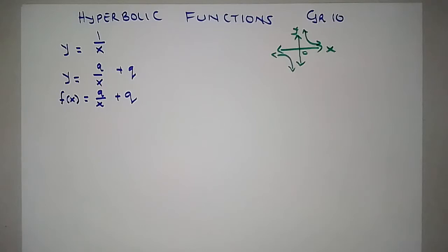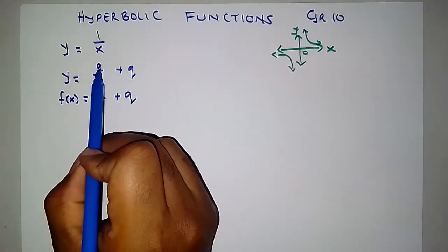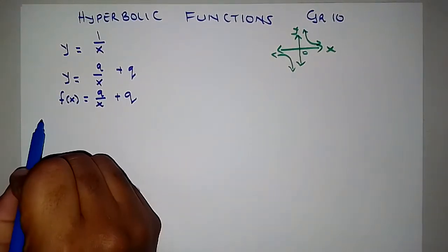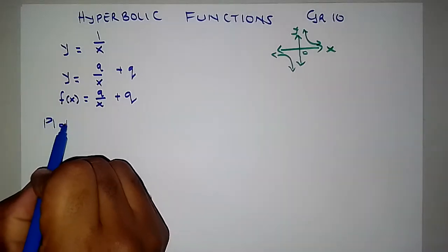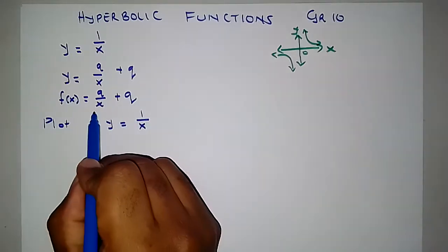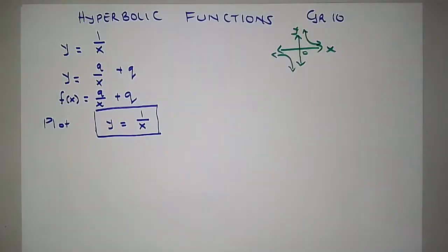Today we've got a general form of y equals a divided by x plus q, where a and q are constants. Before we go any further, I want us to plot this function together. We'll start with y equals 1 over x. The function is going to be shifted up, shifted down, stretched and so on. But this is the base function we are moving from.